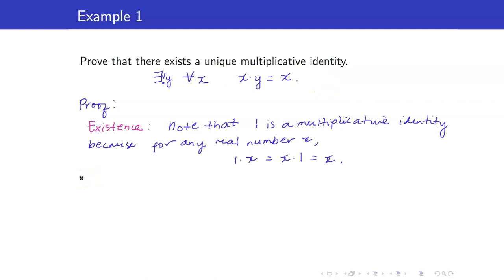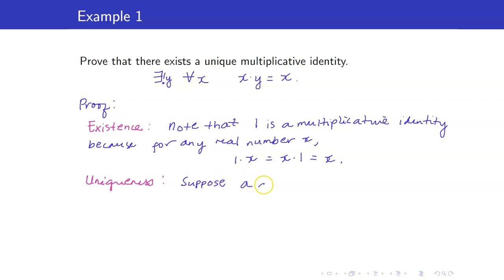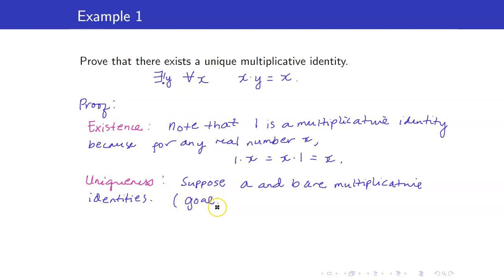Now we prove uniqueness. For the uniqueness part, we assume there exist elements which are multiplicative identities. I will use a and b instead of x and y to avoid confusion with previously used variables. Suppose a and b are both multiplicative identities. Our goal is to show that a equals b — note this is not part of the proof itself, just our target. Since a is a multiplicative identity and b is a real number...